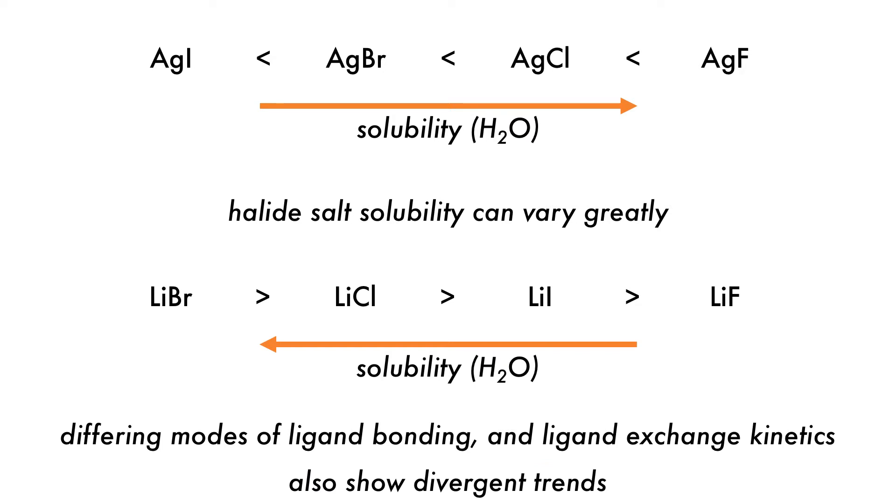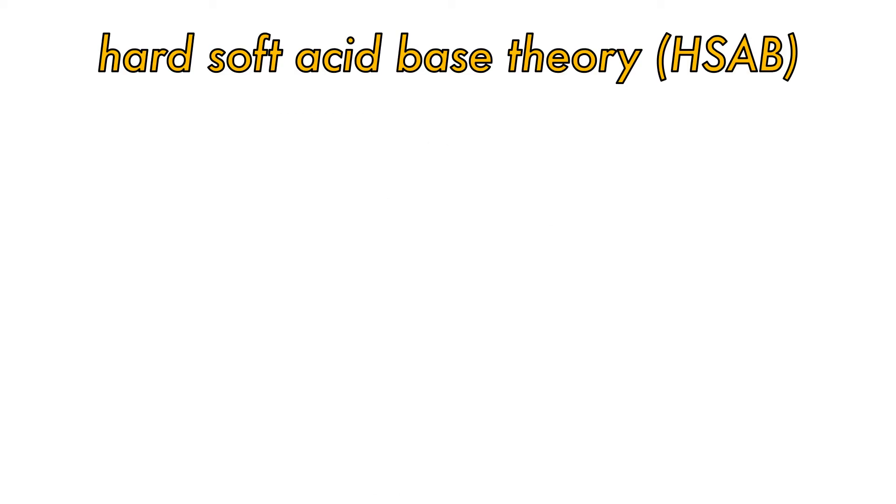Other diverging trends are different modes of ligand bonding and exchange kinetics. How do we account for these trends? To explain these trends, Pearson described his theory of hard and soft acids and bases.